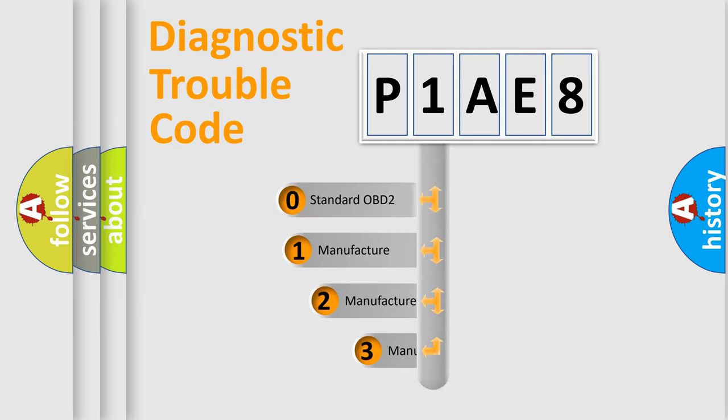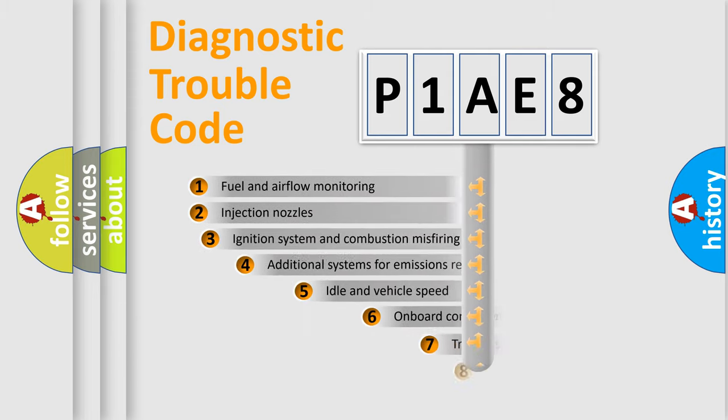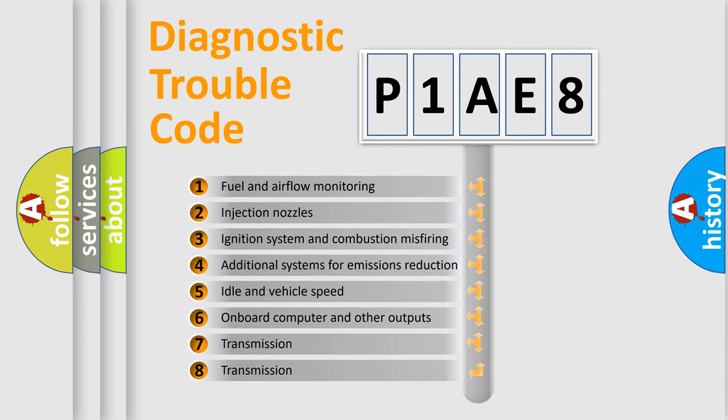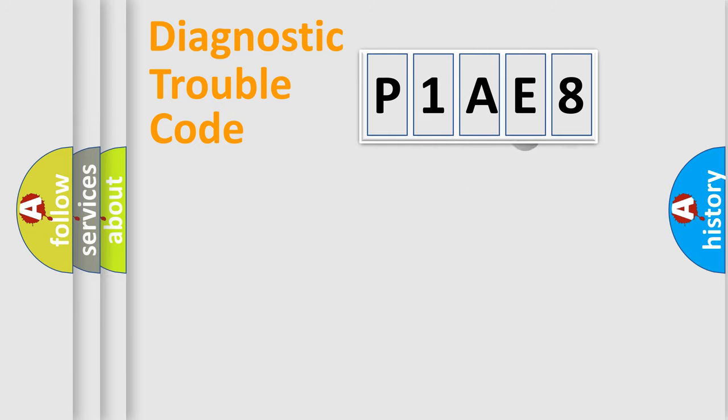If the second character is expressed as zero, it is a standardized error. In the case of numbers 1, 2, or 3, it is a manufacturer-specific expression of the car-specific error. The third character specifies a subset of errors. The distribution shown is valid only for the standardized DTC code. Only the last two characters define the specific fault of the group.